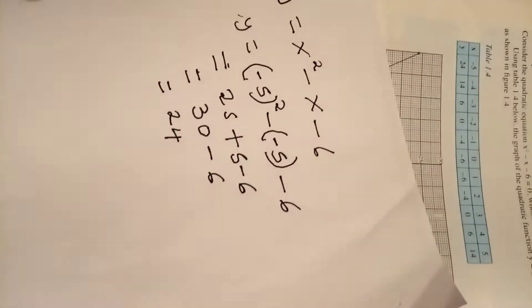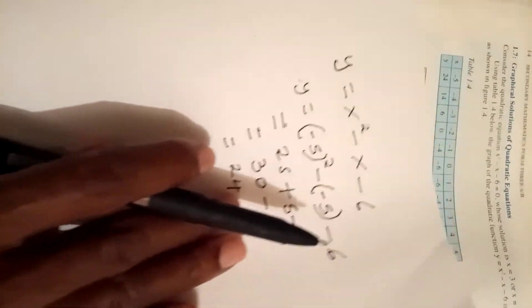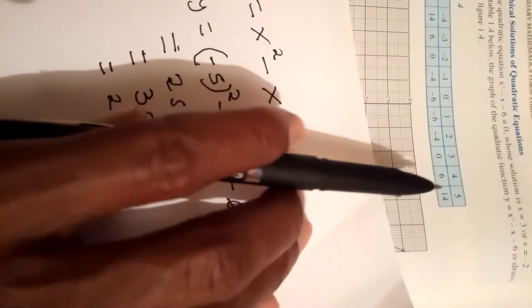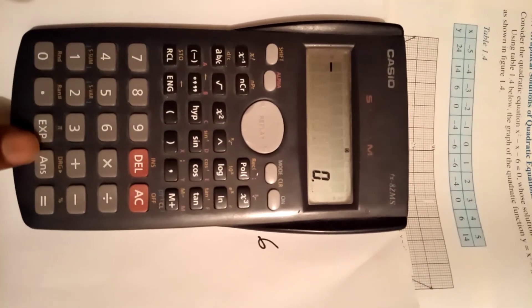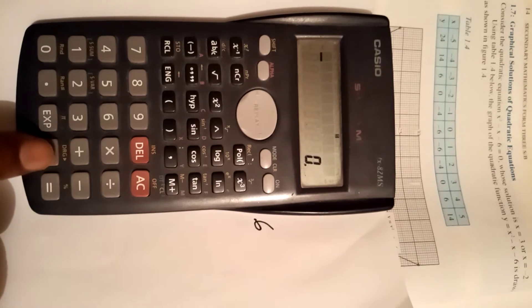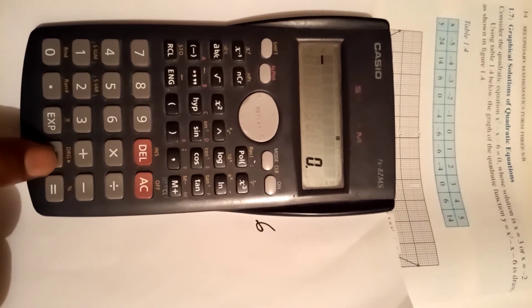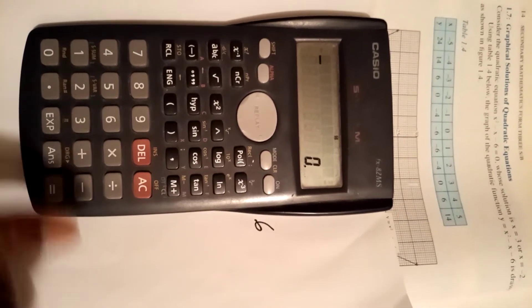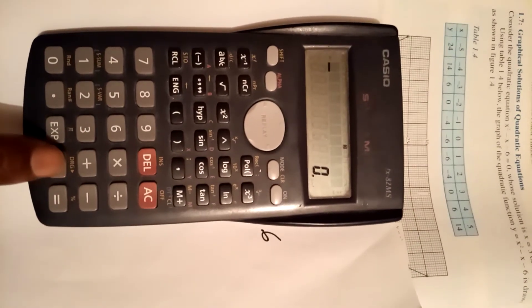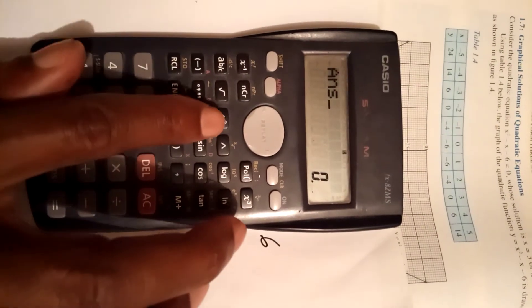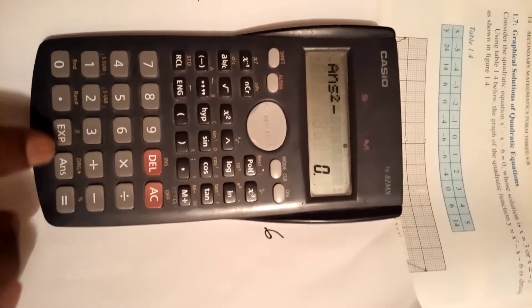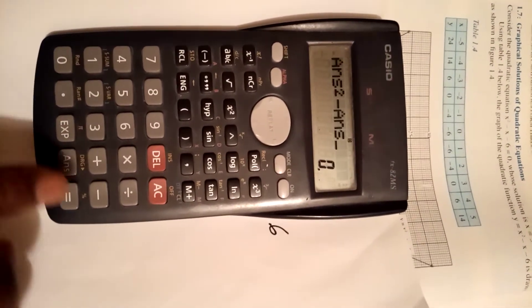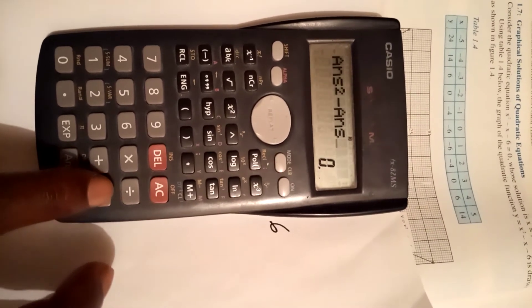Now we can feed the function in the calculator where we have x, we are going to use the answer key. This answer key is going to be our x when I'm feeding the equation in the calculator. So I'll have answer squared, and then take away answer because it's x, and then take away 6.